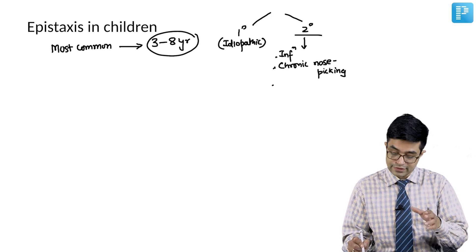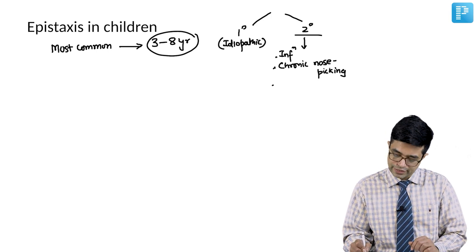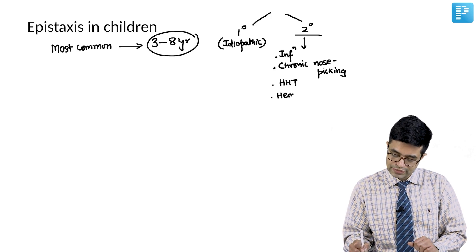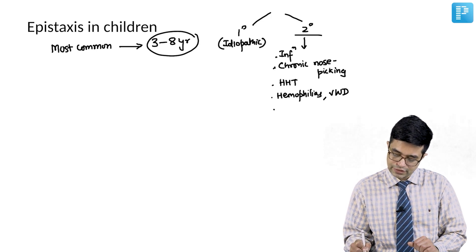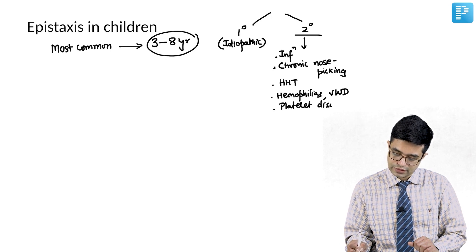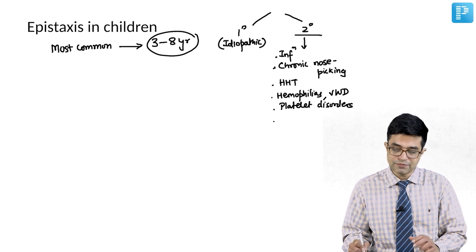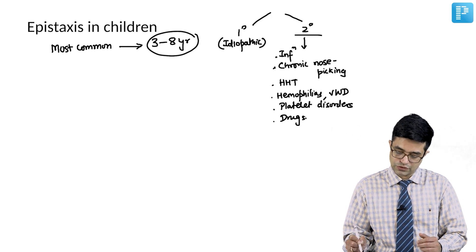Serious epistaxis can occur in vascular malformations like hereditary hemorrhagic telangiectasia. It can occur in hemophilias, von Willebrand disease, and platelet disorders. There is a long list. Sometimes it can be a side effect of drug use as well.